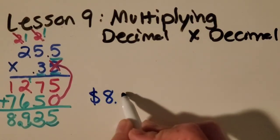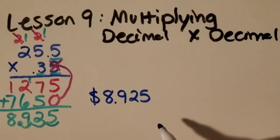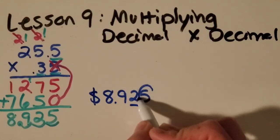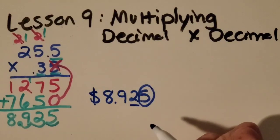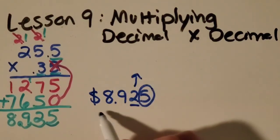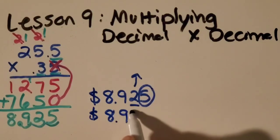Okay so that means that the 25.5 pounds of jalapenos cost this much. But since that's not a very normal looking amount of money I think we should round to the nearest hundredths. So zero to four stay on the floor. Five to nine go up the line. And since it's a five that tells us to go up to eight dollars and 93 cents. Great job!